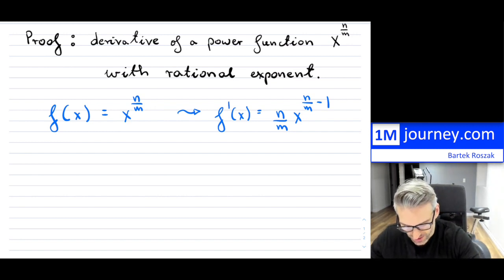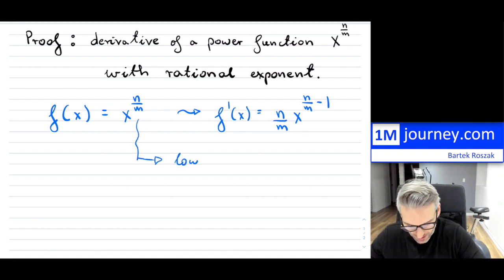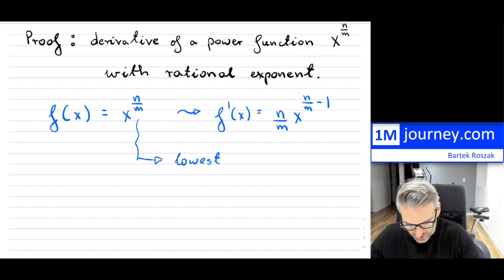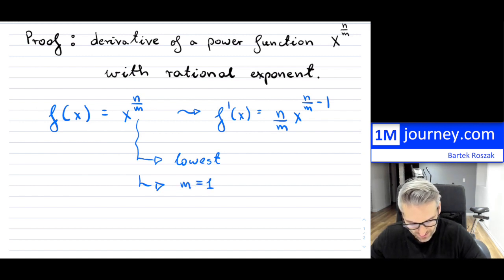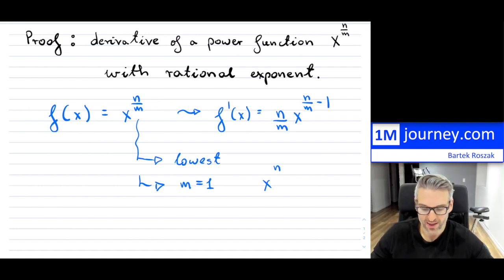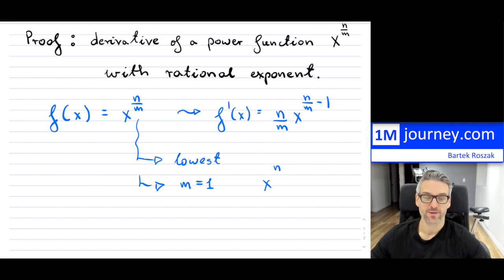We're going to assume that the fraction n/m is in lowest terms, and we're not having the case where m is equal to 1, because then we'd simply run into a power function with positive or negative integers.